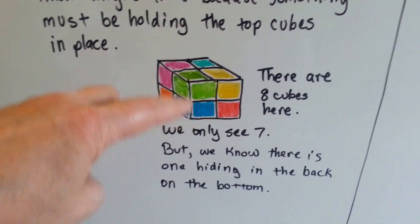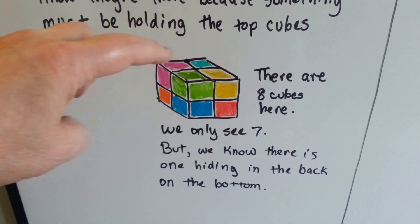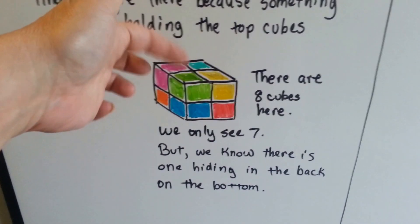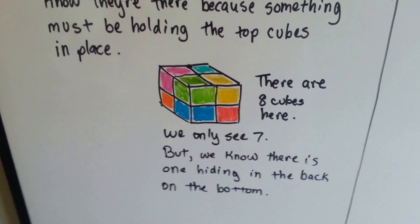There's eight cubes here, four in the front, and these three—turquoise, pink, and orange—and we only see seven, but we know there's one hiding in the back, in the bottom, holding the turquoise one up, right?